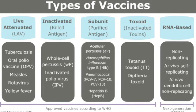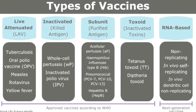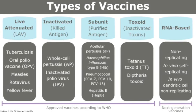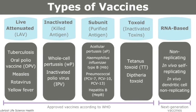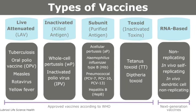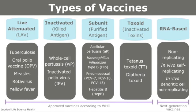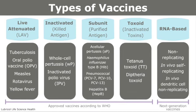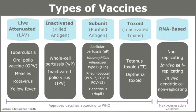There are several different types of vaccines, including inactivated vaccines, live attenuated vaccines, messenger RNA vaccines, subunit, recombinant, polysaccharide and conjugate vaccines, toxoid vaccines, and viral vector vaccines. In this lecture, we will take a look at the many different types of vaccines and more.